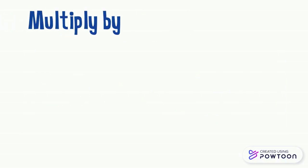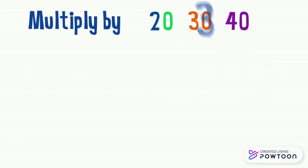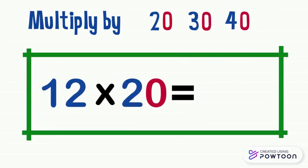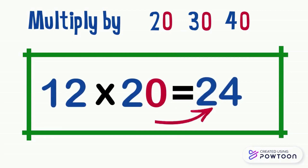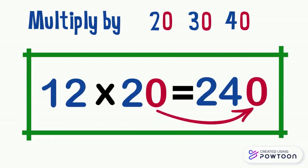To multiply a number by 20, 30, or 40, we multiply the number by 2, 3, or 4, then we put the 0 to the right of this number. For example, 12 times 20: first, we multiply 12 by 2, which is equal to 24. Then we put the 0 to the right of 24. So 12 times 20 equals 240.